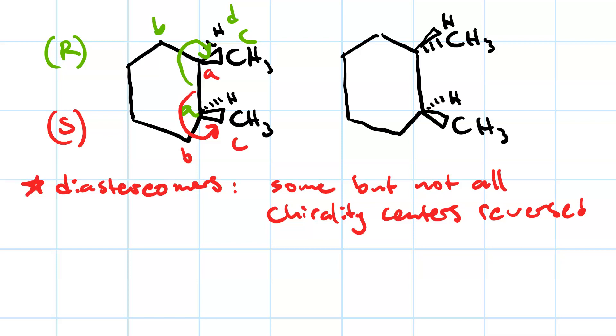For the top chirality center for the molecule on the right, we've got ABC clockwise, but the lowest priority group is on a wedge, which means it's S.